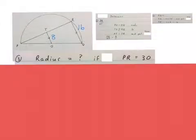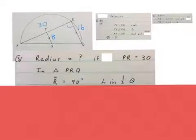The next question asks, determine the length of the radius if PR is 30. Then we will say, in triangle PRQ, PRQ, this triangle, angle R is 90 degrees, angled in a half circle, in a semicircle.